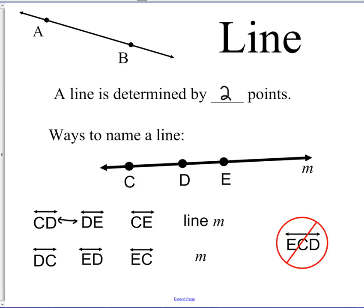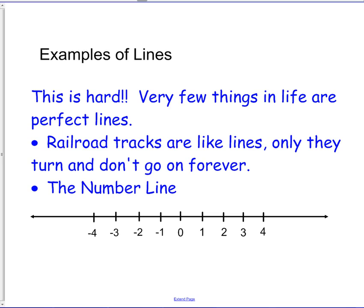Alright, so point, line, and then let's look at some examples of lines. This is actually really tough to come up with examples of true lines in our world. Very few things in life are perfect lines. Railroad tracks are like lines, but they turn and they don't go on forever. So they're not real, true lines. But if you look at a railroad track and they go straight for a long way, as far as you can see, they look like lines. That's the best example. The number line, it's kind of a mathematical example here, but this is a true line. It goes forever negative and forever positive.